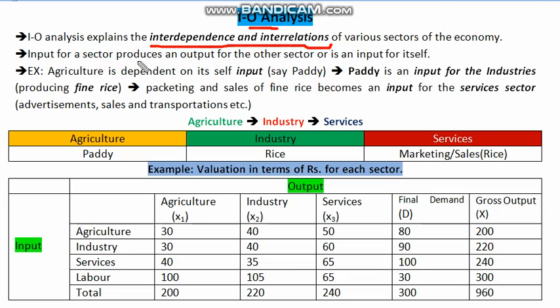The whole flow of input and output mechanism — that means the output of one sector becomes an input for another sector, and the output of that middle sector becomes an input for the last sector or the services sector — this whole flow of the output mechanism from the different sectors of the economy can be analyzed with the help of input-output analysis.